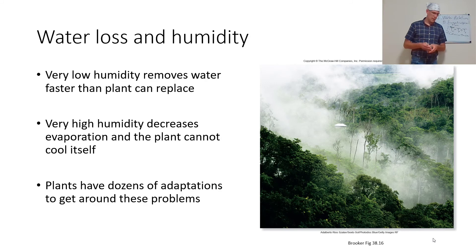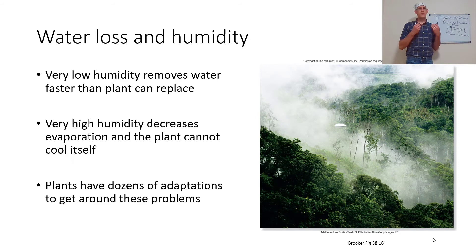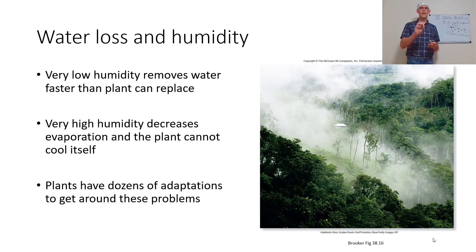Humidity is a problem though. Very low humidity can remove water faster than the plant can replace it from the soil — a longer time with less soil water means more stress on the plant. Very high humidity decreases evaporation, which means the plant can't draw up water as effectively. It decreases water stress but decreases the ability of the plant to cool itself. So: high temperature plus high humidity equals hot plants. Plants have dozens of adaptations to get around these problems.